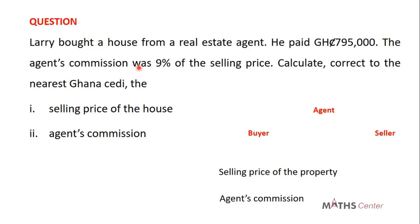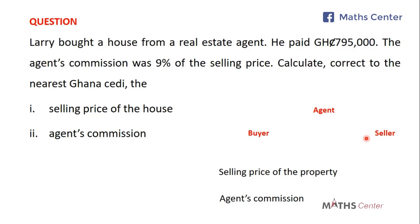That is exactly what is happening here. Larry bought a house from a real estate agent, and in total he paid 795,000 Ghana cedis. The agent charged a commission of 9% of the selling price. We are going to calculate the selling price of the house and the agent's commission.